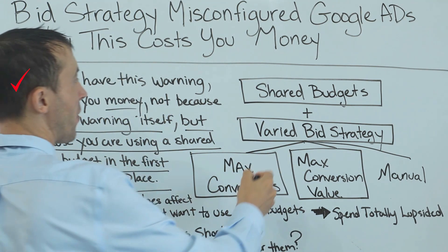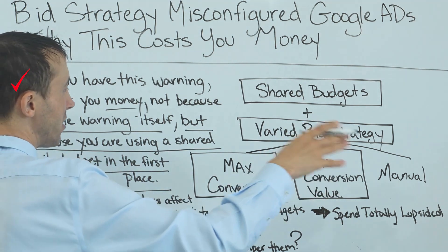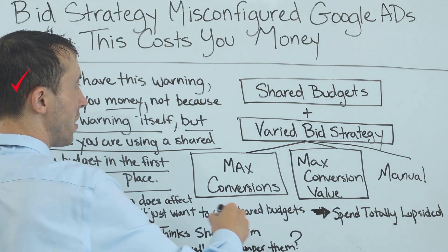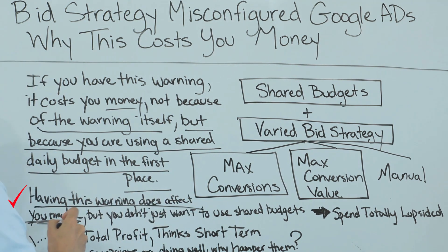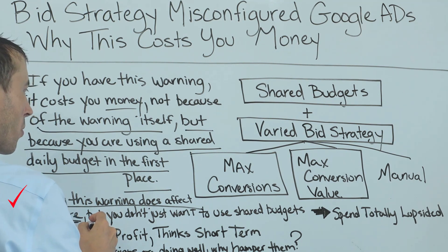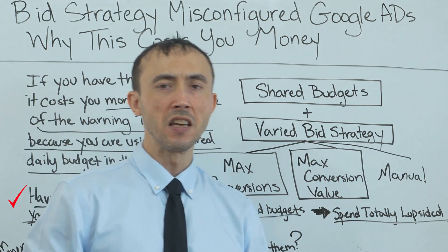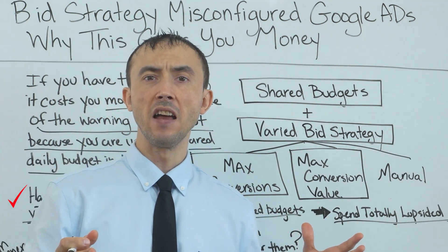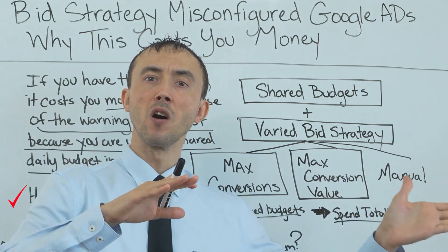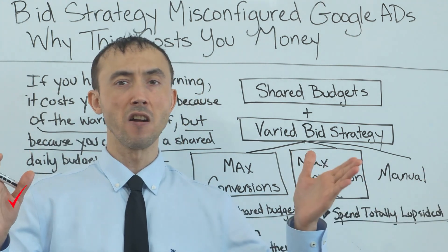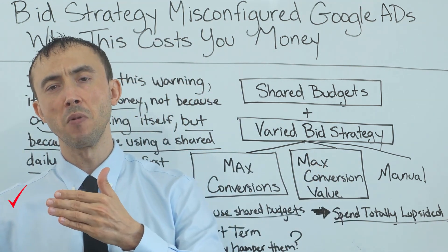If a campaign breaks through the barrier of being consistently profitable, we add it to the 80% and let it rip full blast. When you're using a shared budget, you don't have that same level of control that gives you a good mixture of current performance and long-term growth. If you have a varied bidding strategy — mostly having to do with a portfolio bidding strategy mixed in with other campaigns not using portfolio bidding — that's when you get this bid strategy misconfigured warning, and having this warning does affect the profitability of your account. Spend will be lopsided, and you don't want the algorithm to willy-nilly decide which campaigns to push unless all campaigns in your shared budget have run for years with lots of data. Until you've had 100-plus conversions on each individual campaign, it's going to run the spend lopsided, and you're never really going to get traction on newer campaigns.